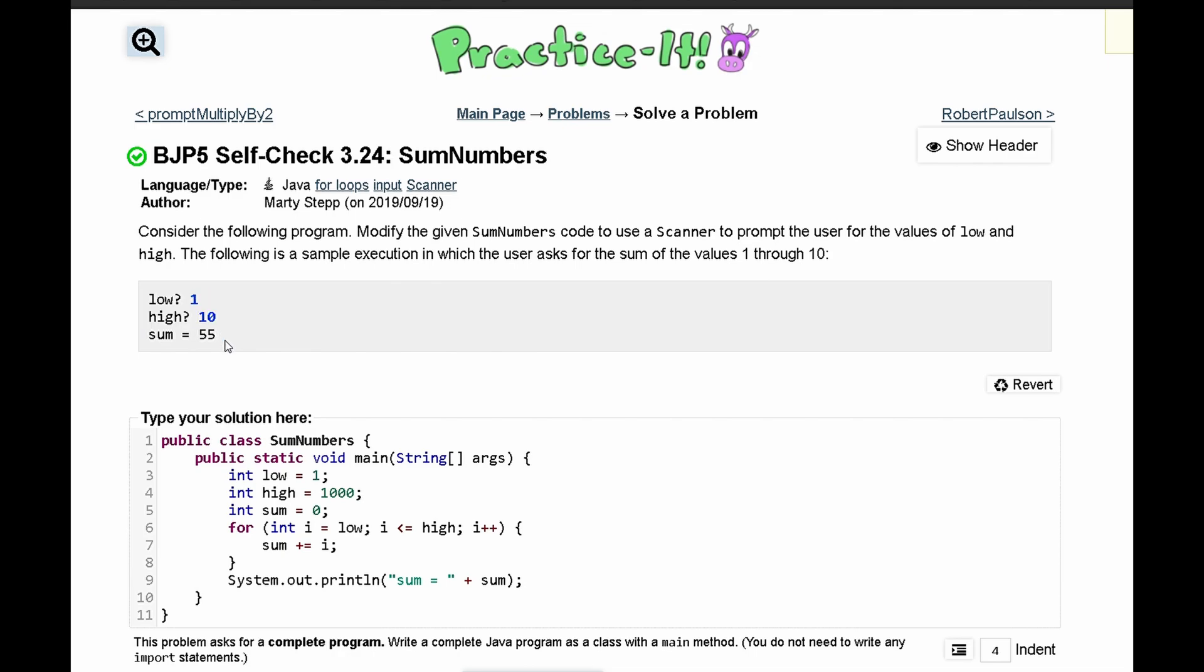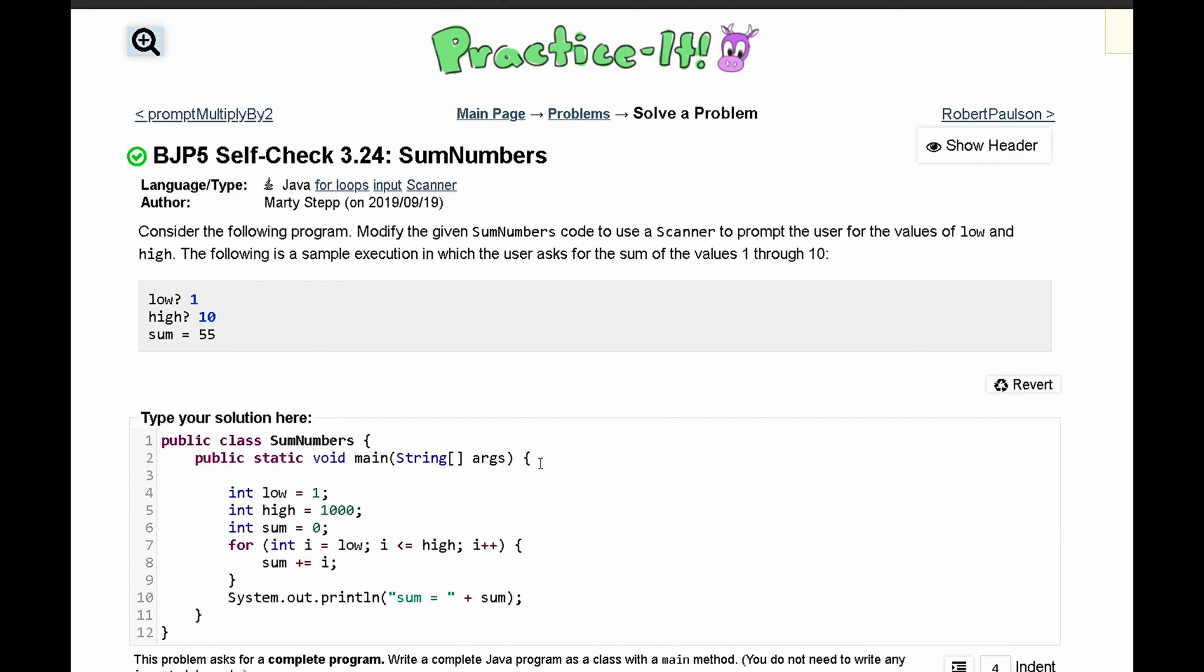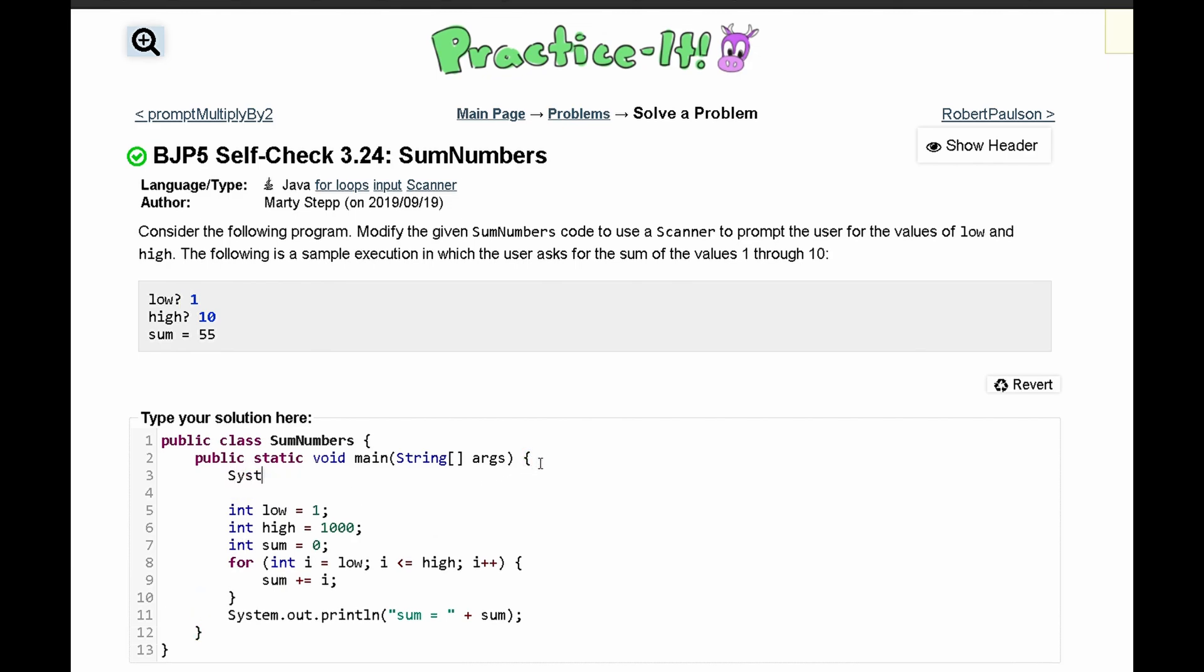We need to have a system.out.println or system.out.print, and it is going to print the prompt 'low' in parentheses. Then we're going to take the user input right here, and since we need user input, we actually need a scanner.